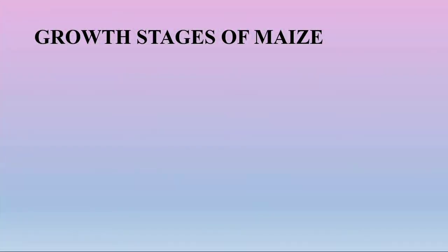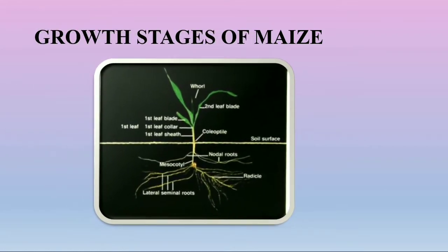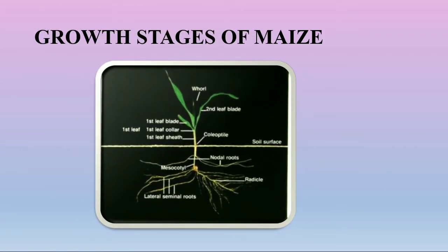Before going to the growth stages of maize, let us discuss some of the parts included in the maize plant. The roots include lateral seminal roots, radical nodal roots, and the mesocotyl. After that, the coleoptile arises from the soil bearing the first leaf sheath. You can observe here in the image the first leaf sheath, first leaf collar, and first leaf blade.